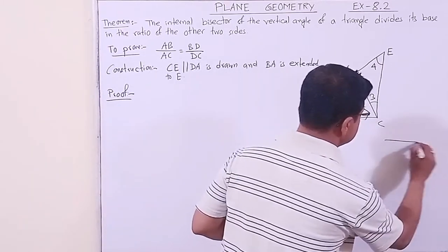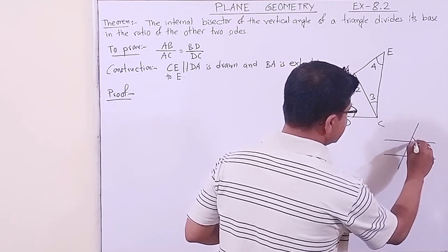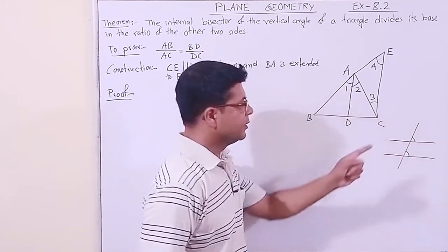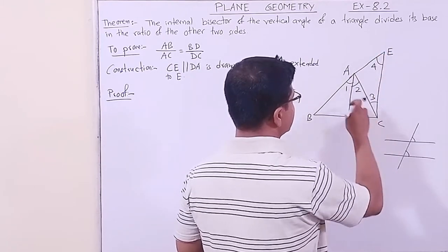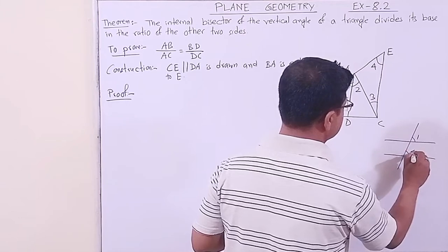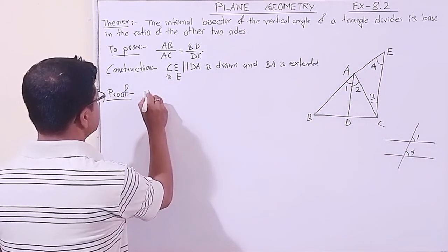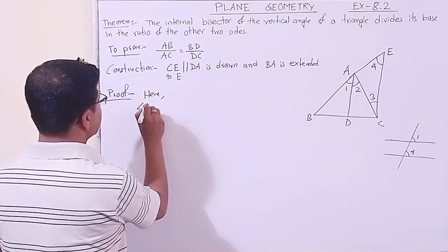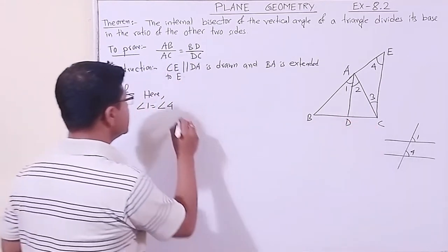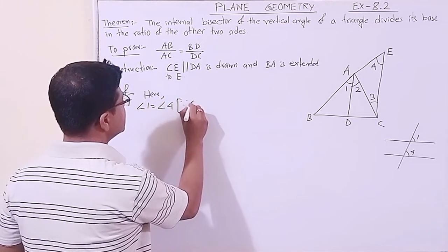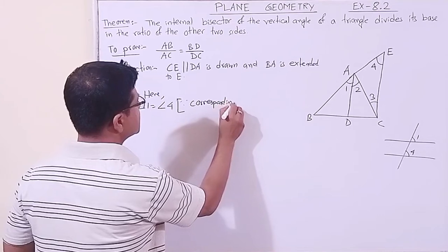Consider the two parallel lines with a transversal. Angle 1 and angle 4 are equal because they are corresponding angles. Since CE is parallel to DA, angle 1 equals angle 4 — corresponding angles.